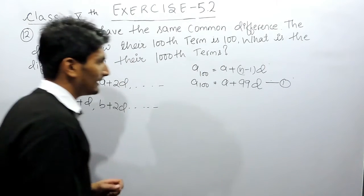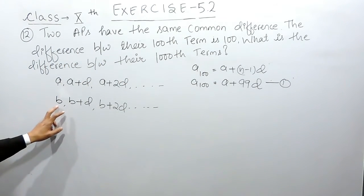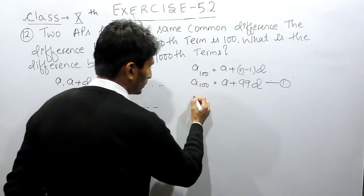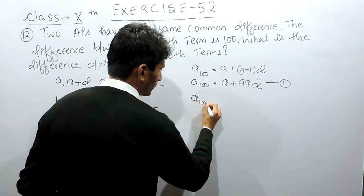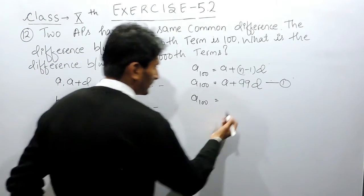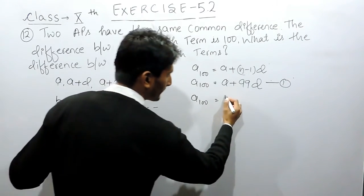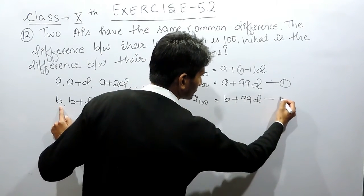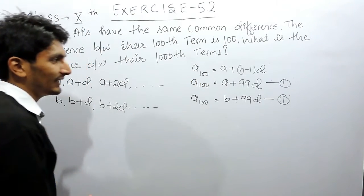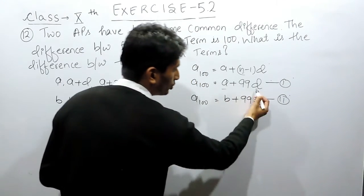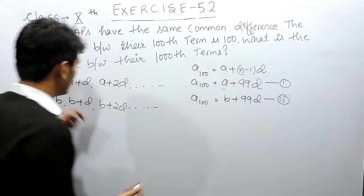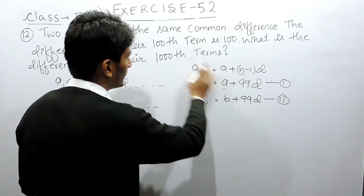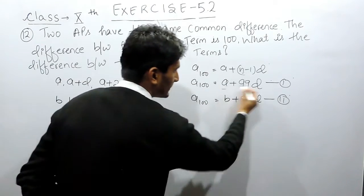Similarly, for the hundredth term of the second AP, the first term is B, so the hundredth term is B plus 99D. These are the hundredth terms of the two different APs, and it is given that the difference between these two is 100.